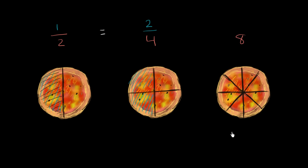Let's say I wanted to eat the same fraction of the pizza. I could eat all of these pieces right over here. How many of those eight equal pieces have I eaten? I've eaten one, two, three, four of those eight equal pieces. And so once again, this fraction — four of eight, or four eighths — is equivalent to two fourths, which is equivalent to one half.